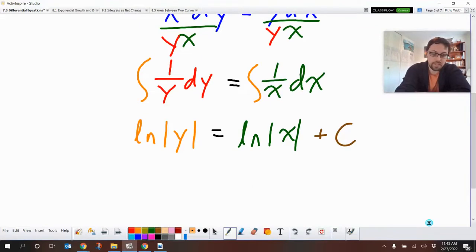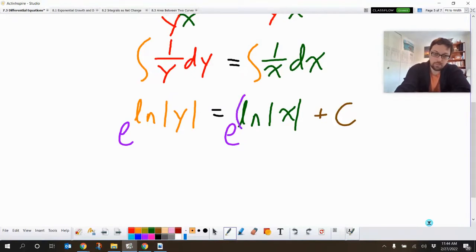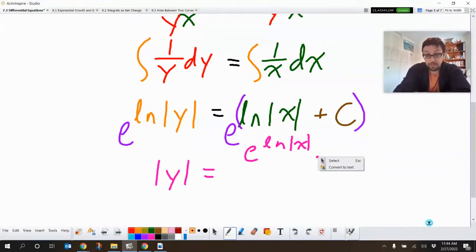Now, we want to try to solve this thing for y. So I want to get rid of that ln. And the way to get rid of an ln is you make everybody an exponent. So e to all that stuff. So then on this side, we just have the absolute value of y equals. This can be broken up. This is e to the ln of x multiplied by, because when you're adding your exponents, you're really multiplying those two bases, e to the c.